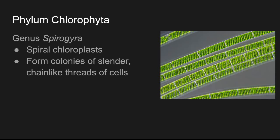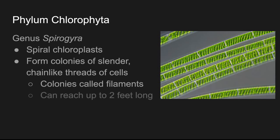You can see they kind of look like threads of bricks — chain-like threads of cells. These colonies are called filaments, and they can reach up to two feet long. Of course they're still microscopically thin, but they can become very long.